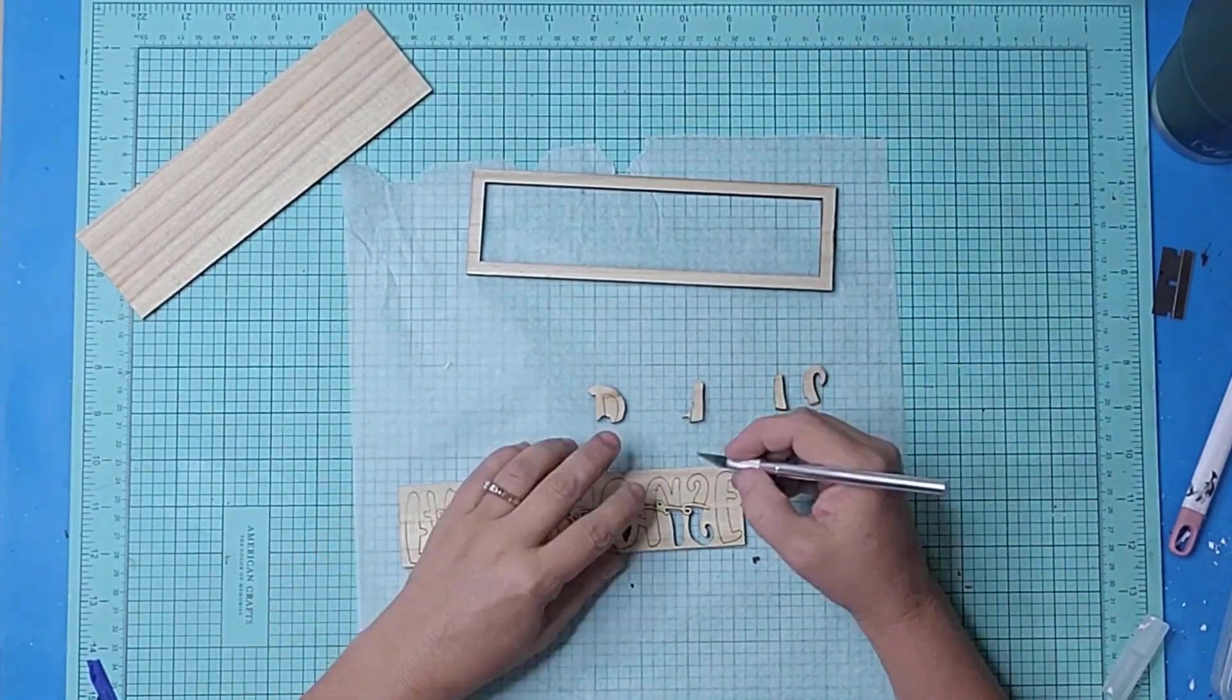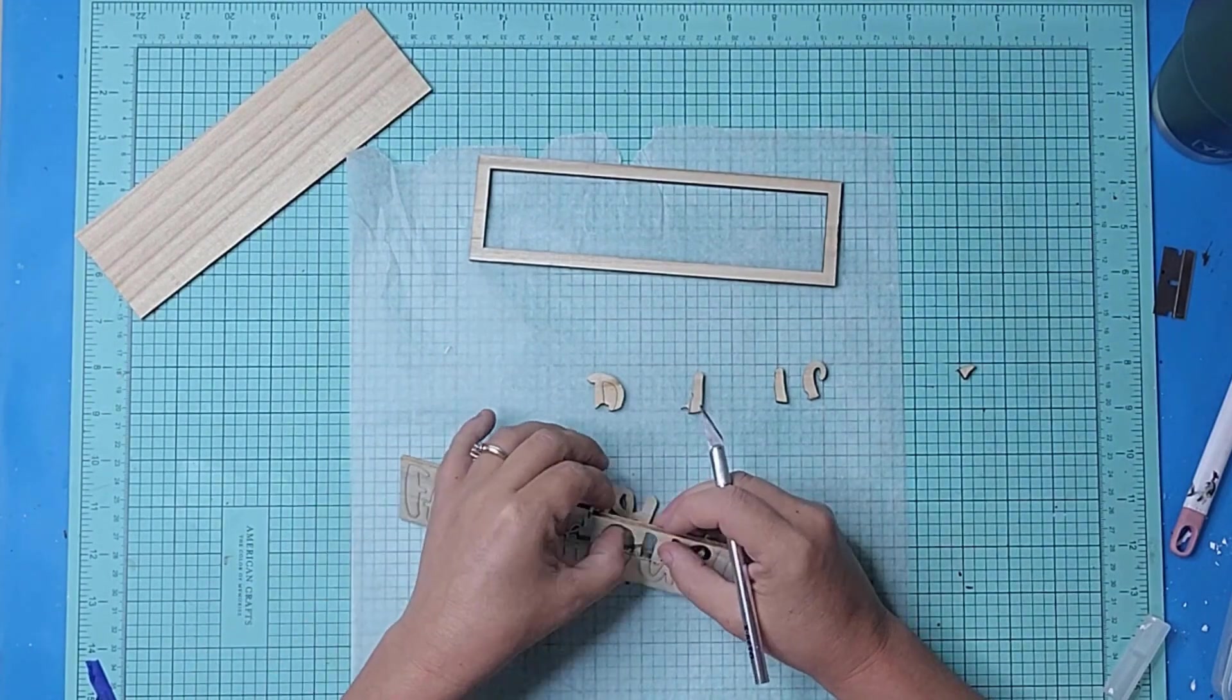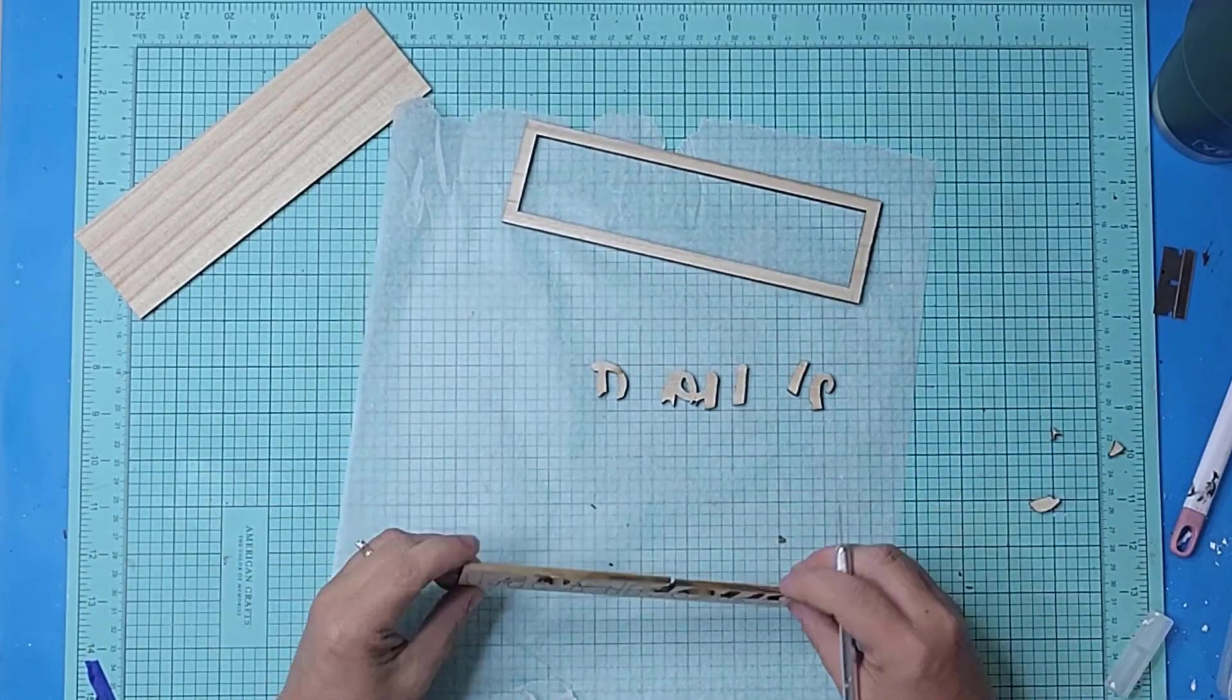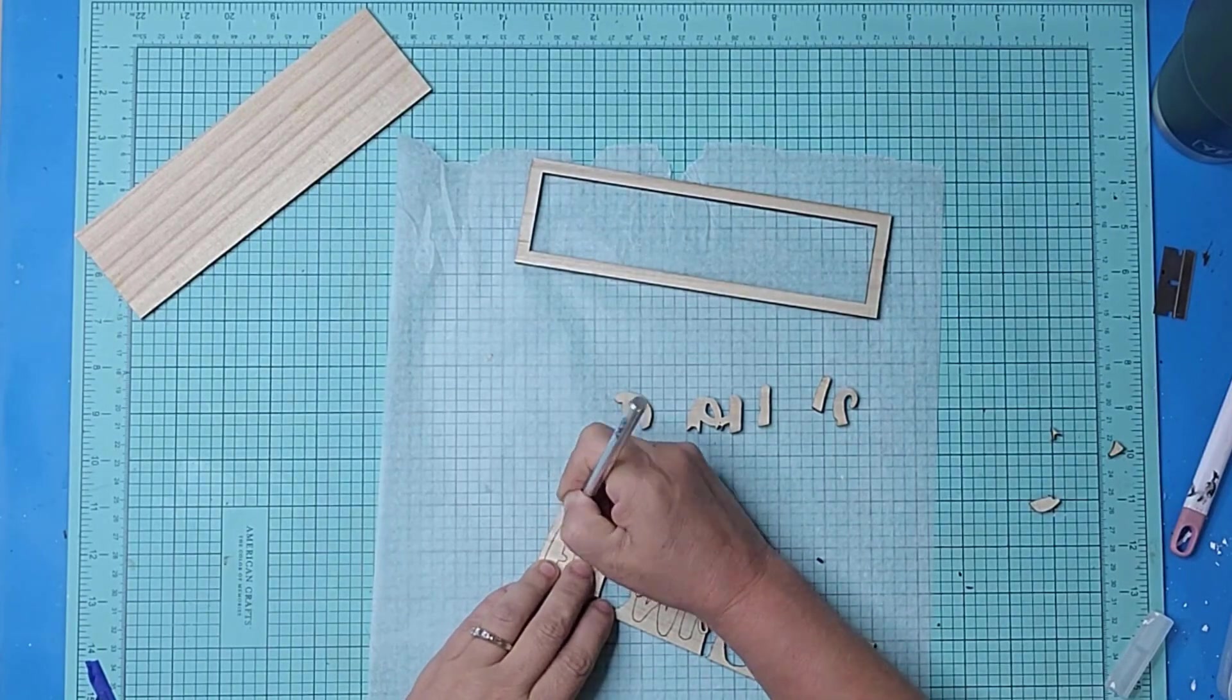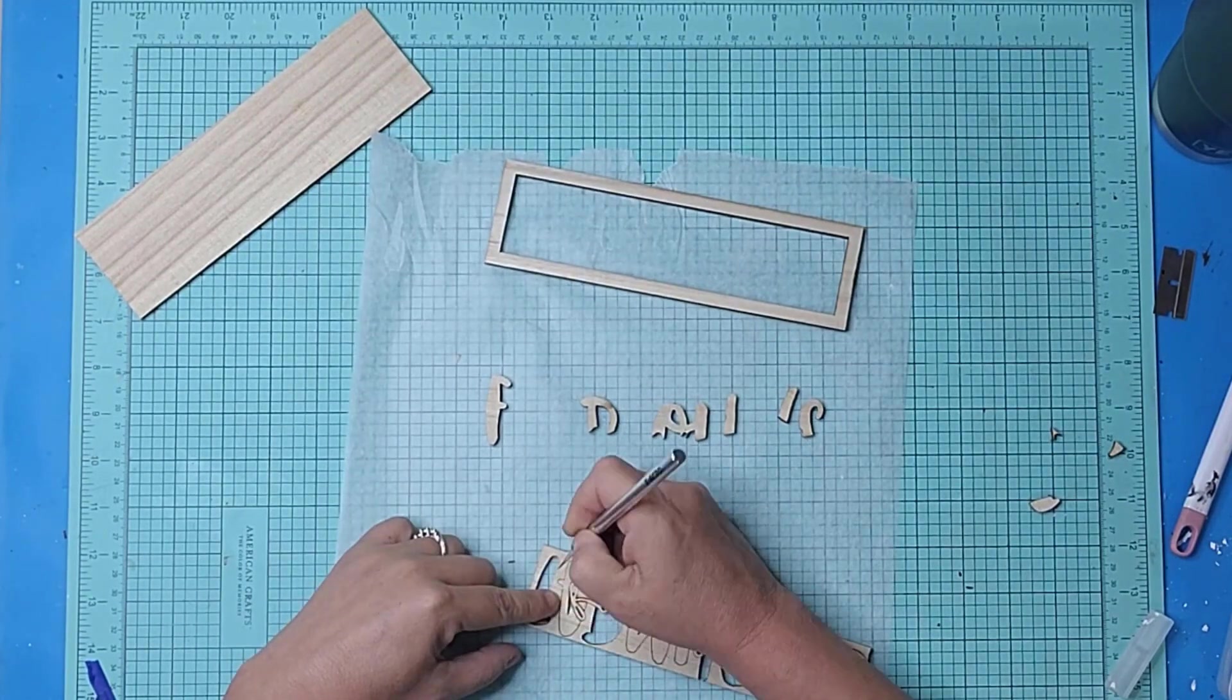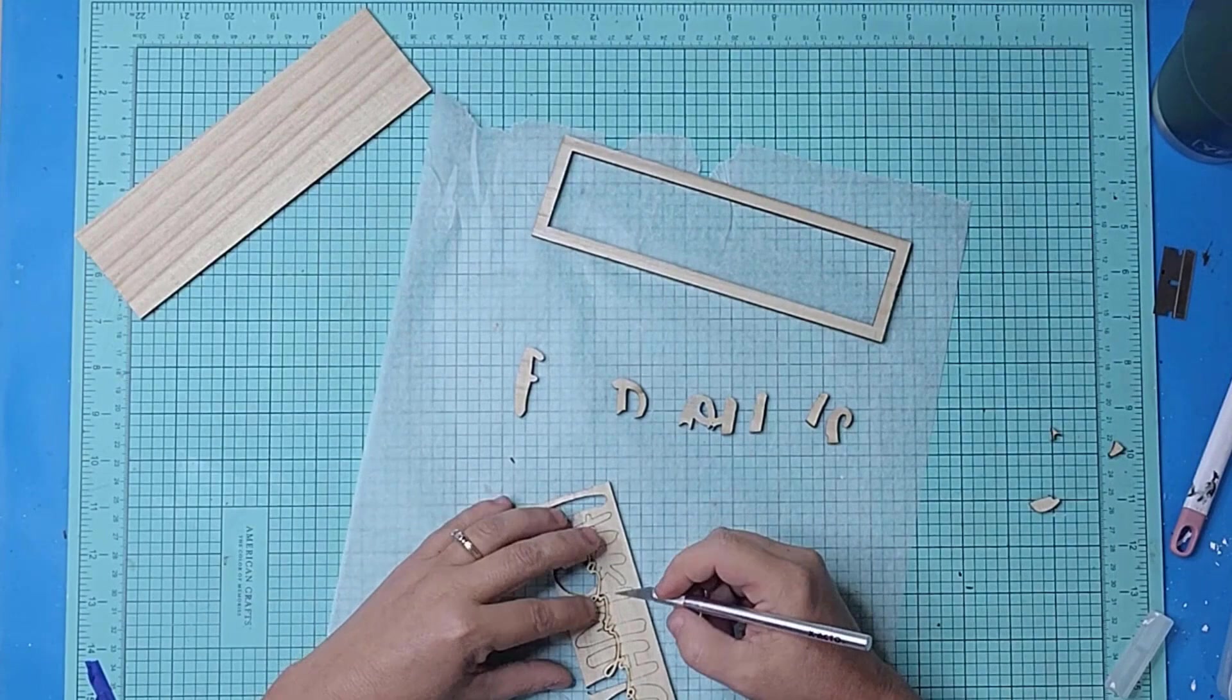Once the machine was finished cutting, I removed all of the cut pieces and I tried to keep them in order so I would know how to put this back together. I used an X-Acto knife in a few places where the wood wasn't cut completely through.